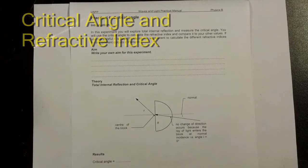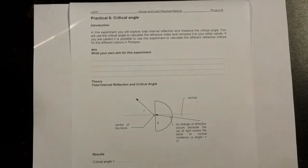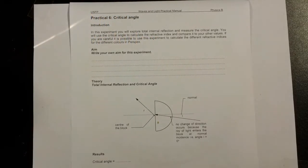In this practice activity you'll have a look at total internal reflection and measure what we call the critical angle, and you will use the critical angle to calculate the refractive index and compare that to the other values that you got from your earlier experiment.